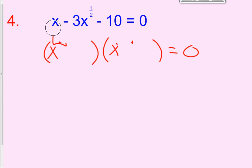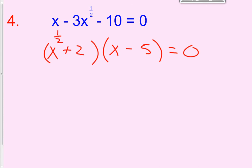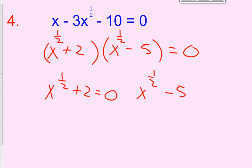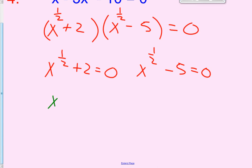So we have x to the 1 half times x to the 1 half, and then factors of 10 that sum to 3 are negative 5 and positive 2. So our factors are x to the 1 half plus 2, and x to the 1 half minus 5. Setting them equal to zero: x to the 1 half plus 2 equals 0, and x to the 1 half minus 5 equals 0. That gives x to the 1 half equals negative 2, and x to the 1 half equals positive 5.